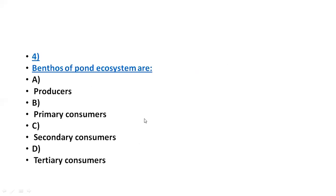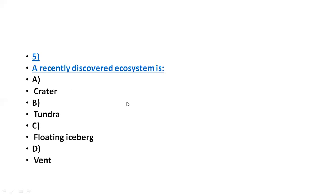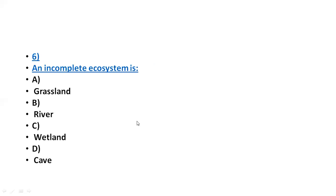The benthos of pond ecosystem are primary consumers — we call the benthos of pond ecosystem primary consumers. A recently discovered ecosystem is the vent. An incomplete ecosystem is nothing but a cave — cave is an incomplete ecosystem, and it is also considered a temporary ecosystem.